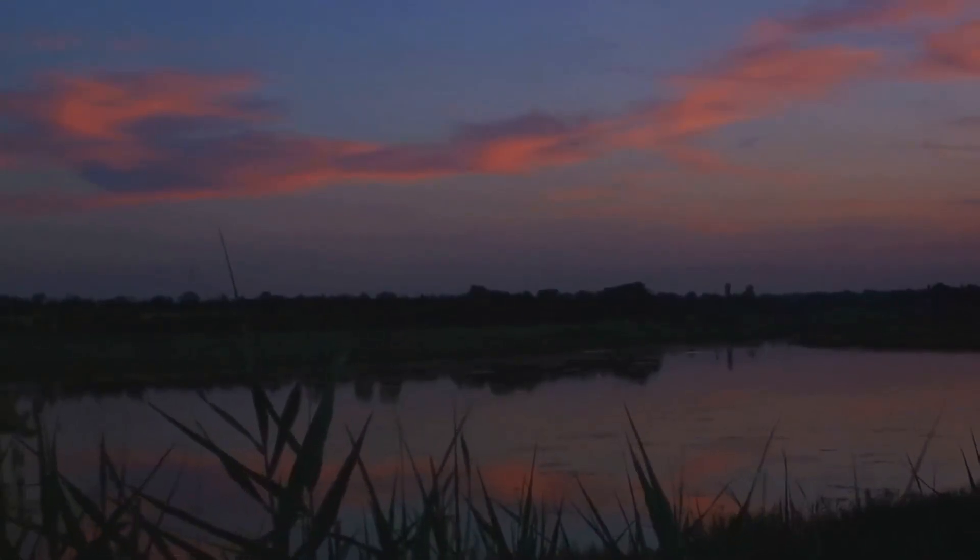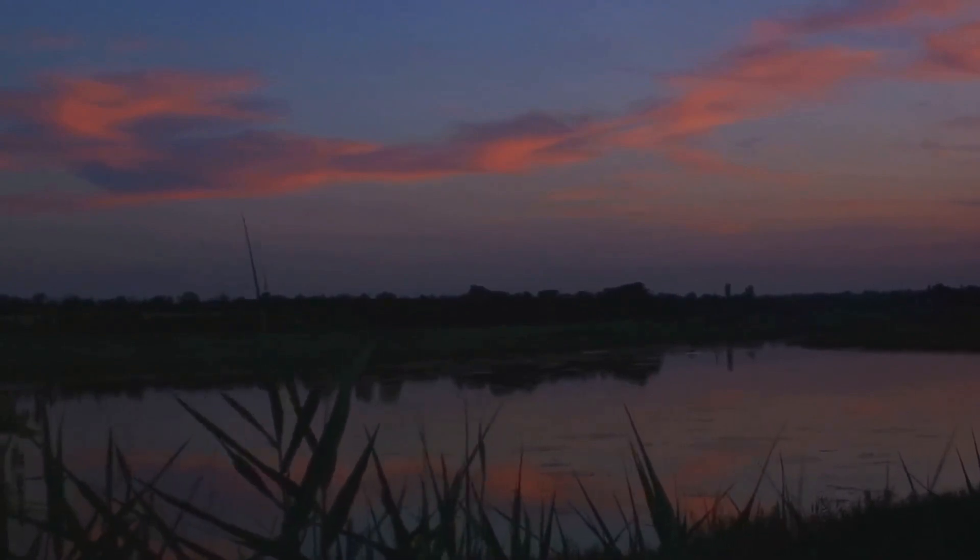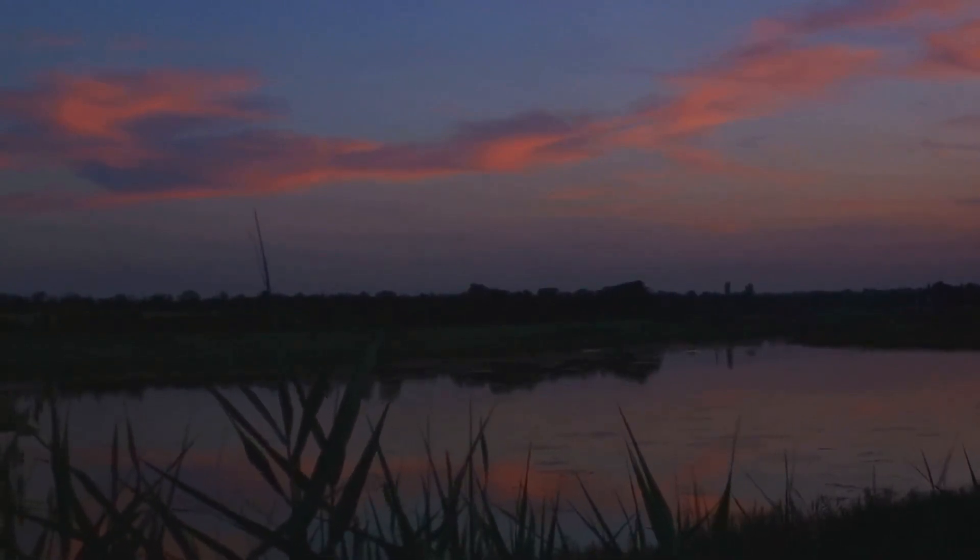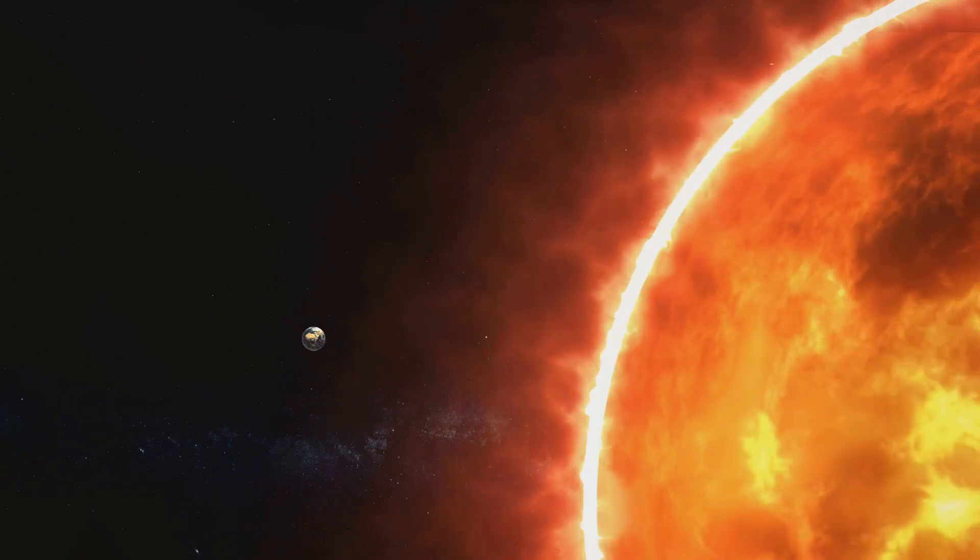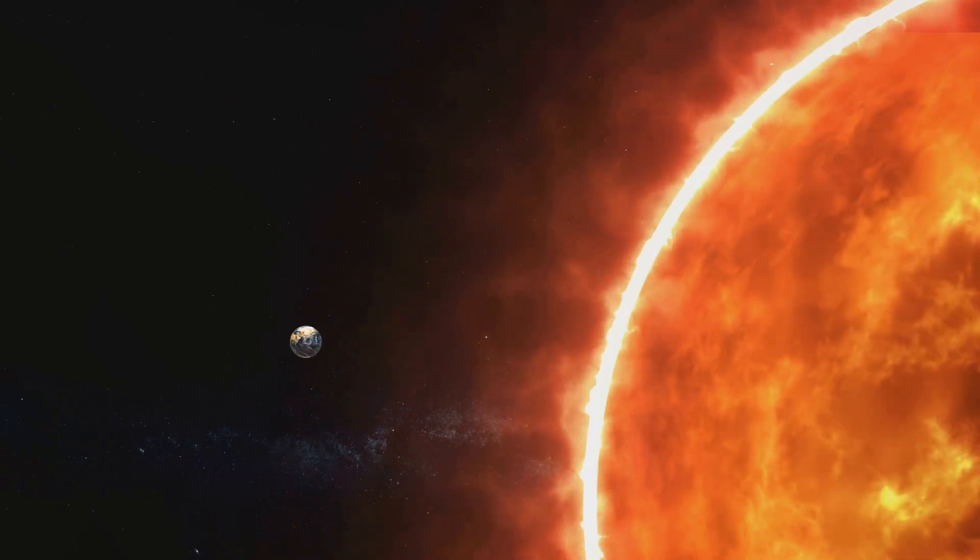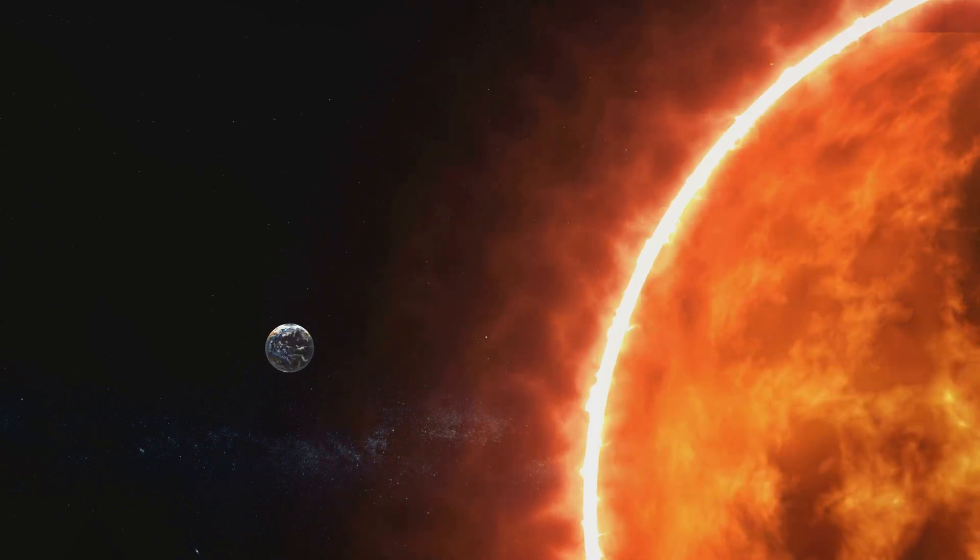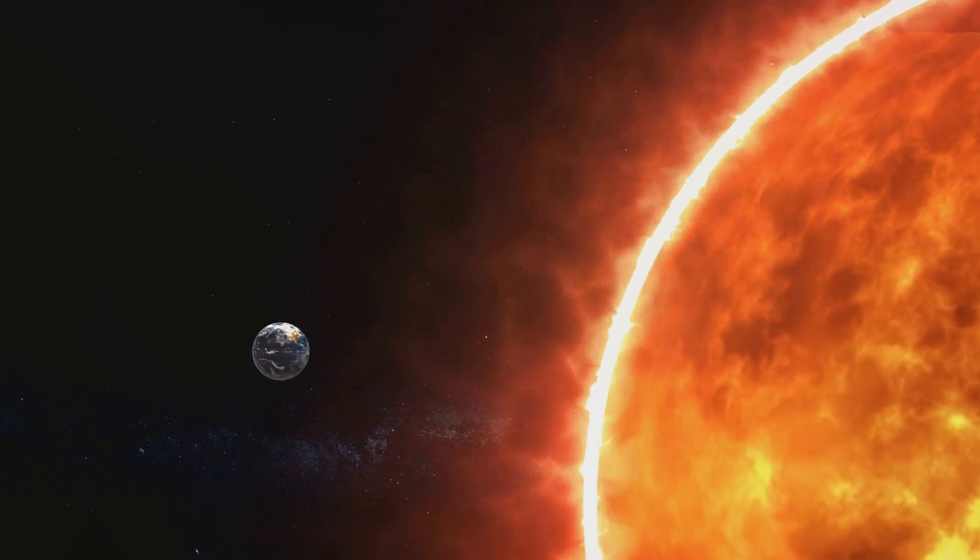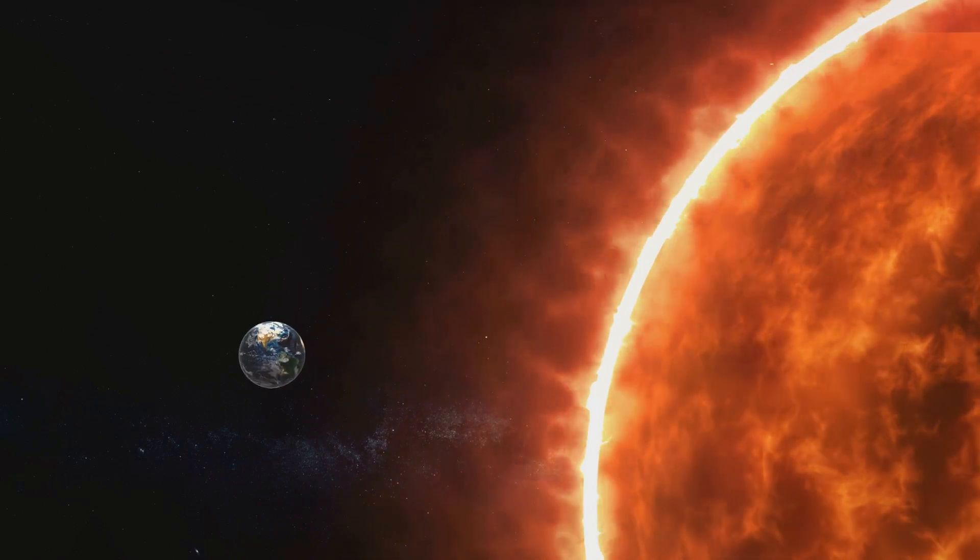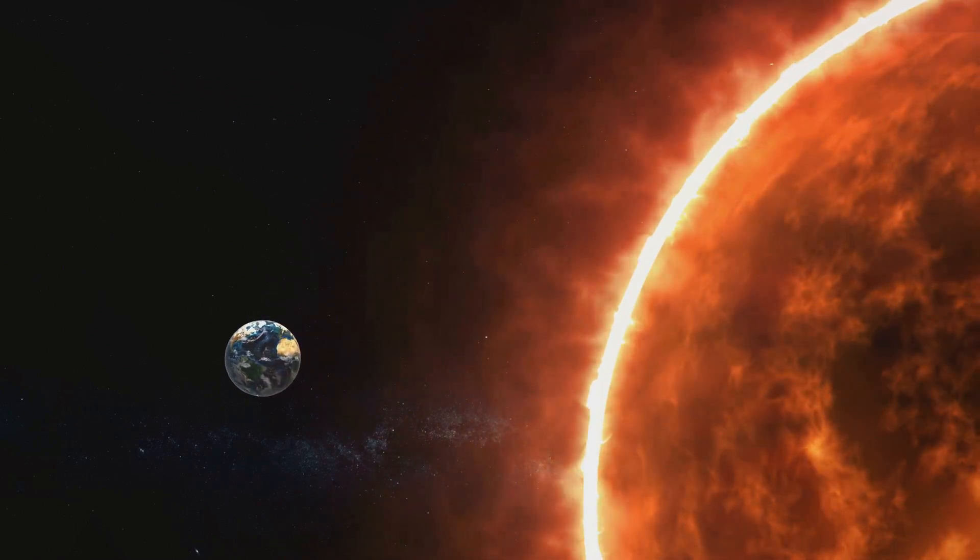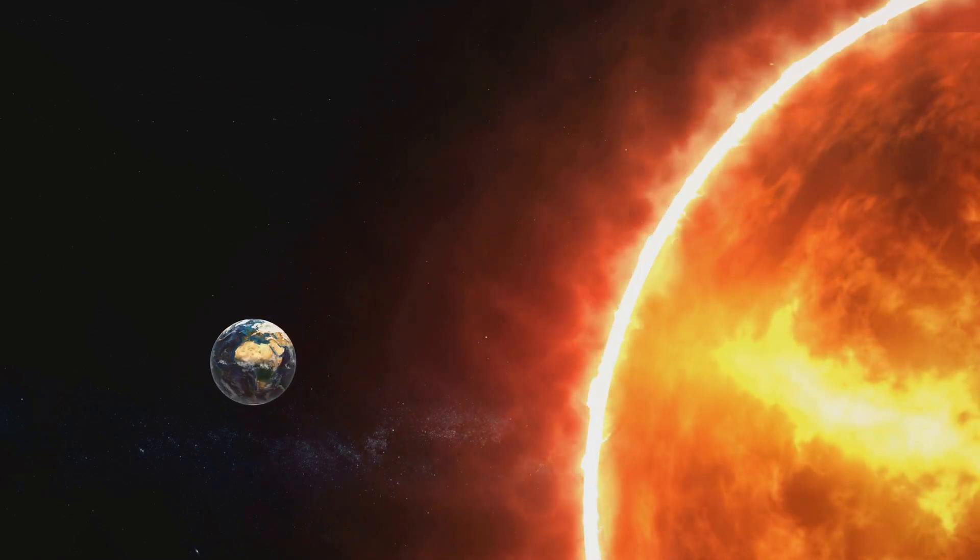But the habitable zone is only one piece of the puzzle. A planet could be in the perfect location, but without the right atmosphere, life would still struggle to thrive. An atmosphere provides protection from harmful solar radiation, helps regulate temperature, and if it contains the right mix of gases, can provide the ingredients necessary for life to develop.